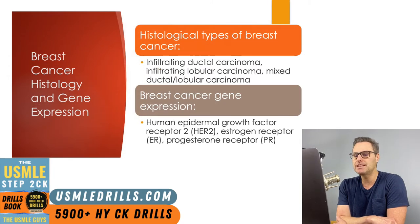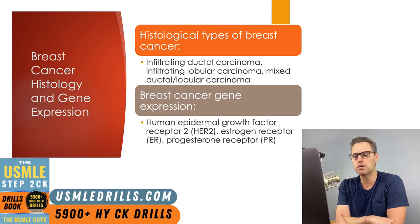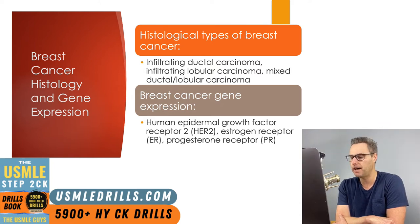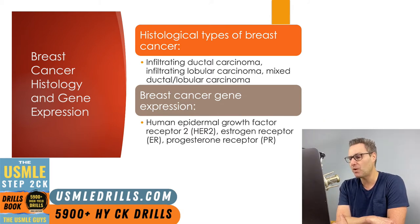As for the different histological types of breast cancer, the most common is infiltrating ductal carcinoma, which appears as cords and nests of cells. The next most common is infiltrating lobular carcinoma, which appears as small cells infiltrating the mammary stroma and adipose tissue in a single file pattern. Finally, the next most common is mixed ductal/lobular carcinoma, which has features of both histologic types. Together, these three histologies make up around 85 to 95% of all breast cancers.